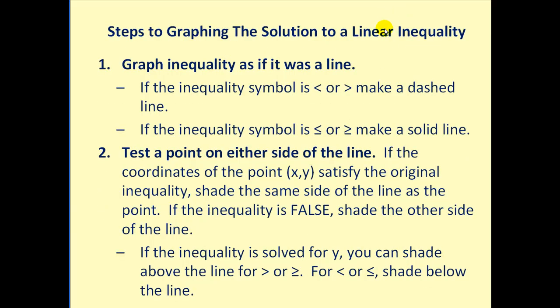Here are the steps to graphing the solution to a linear inequality. Step one, we will graph the inequality as if it was a line. However, if the inequality symbol is less than or greater than, we will make a dashed line because the line will not be part of the solution. If the inequality symbol is less than or equal or greater than or equal, we will make a solid line because the line will be part of the solution.